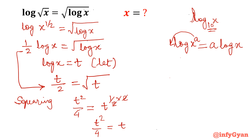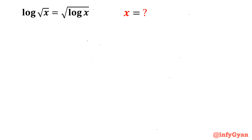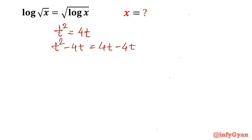Multiply both sides by 4, so t squared equals 4t. Now take 4t to the left side: t squared minus 4t equals 0. You can see t is common, so t times (t minus 4) equals 0.